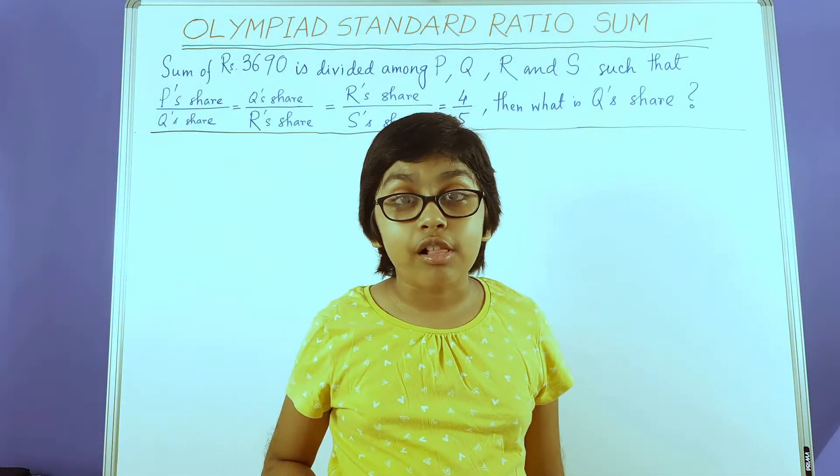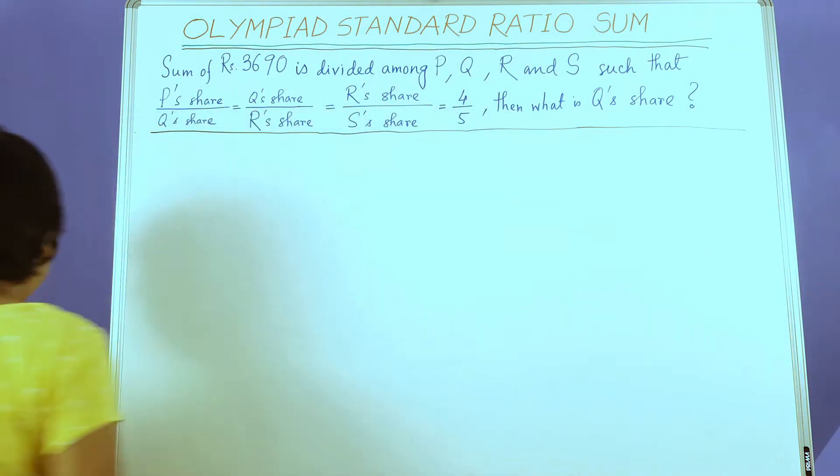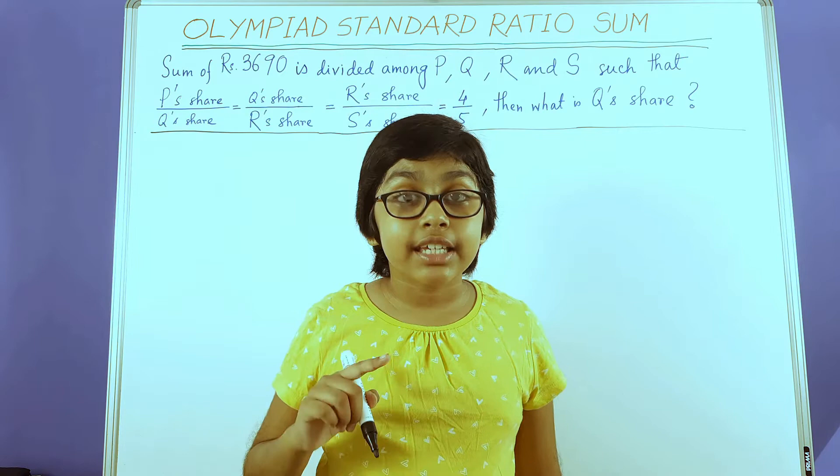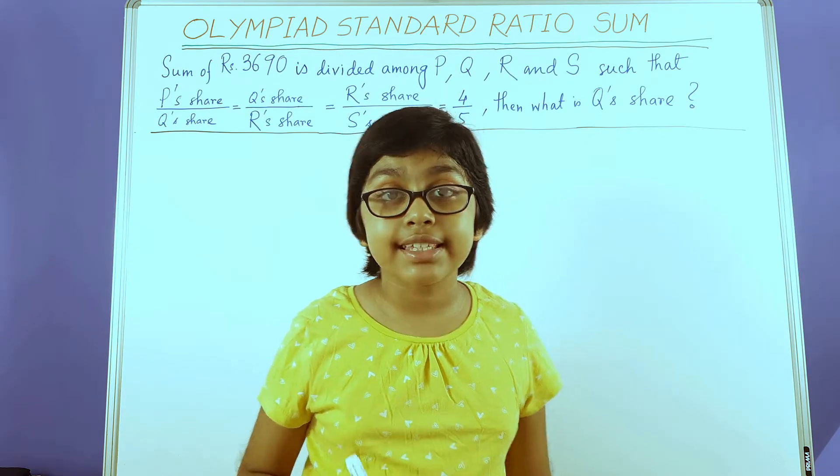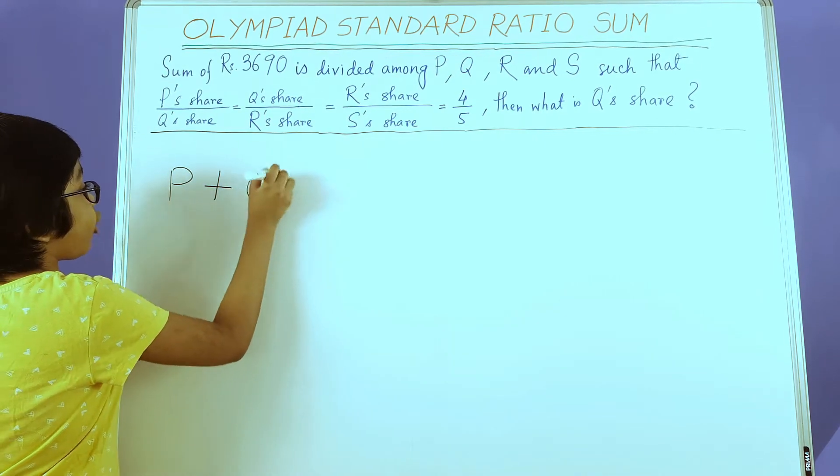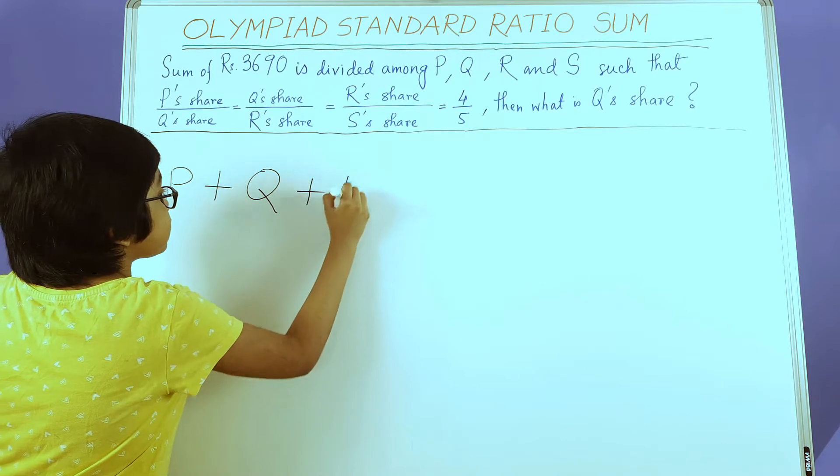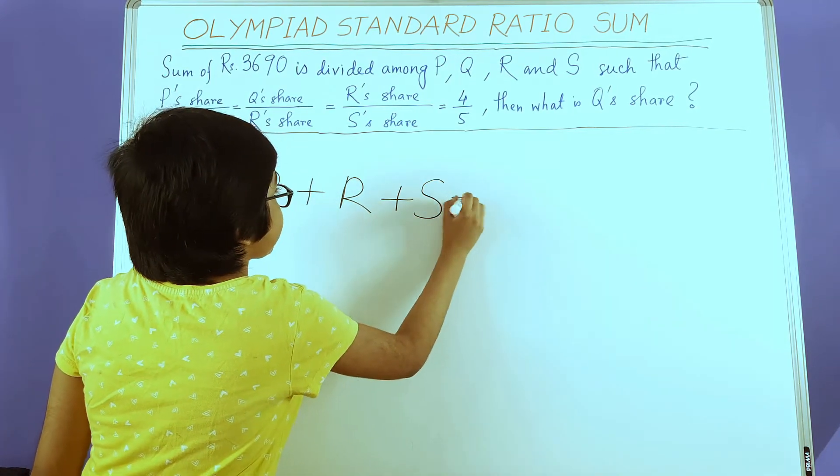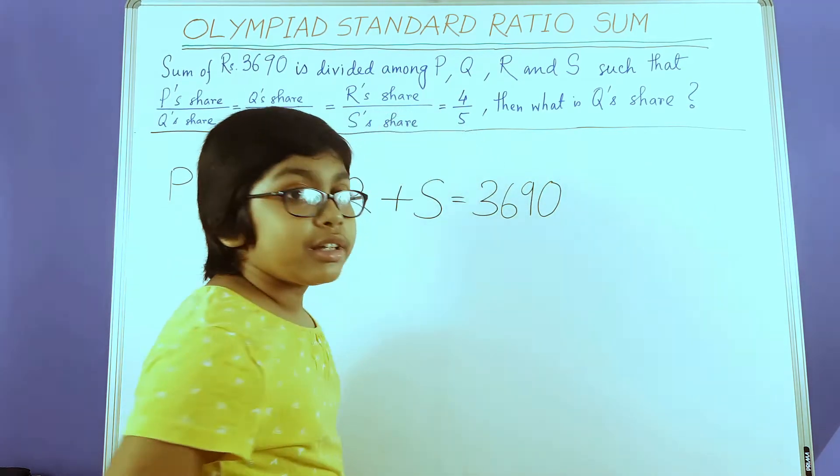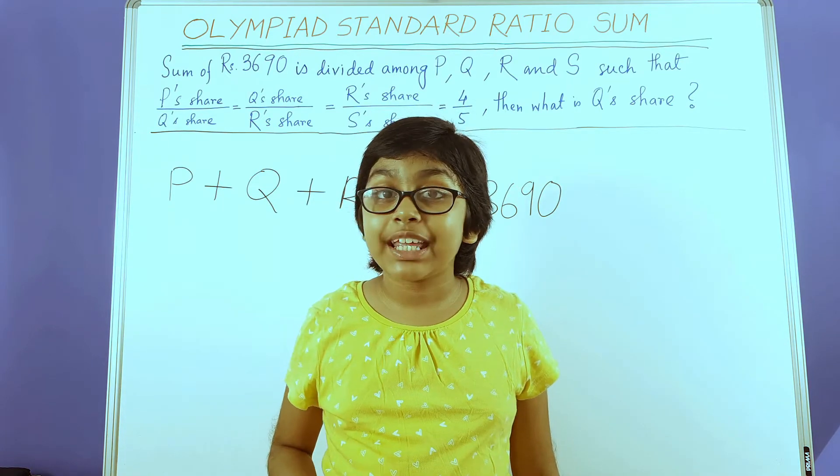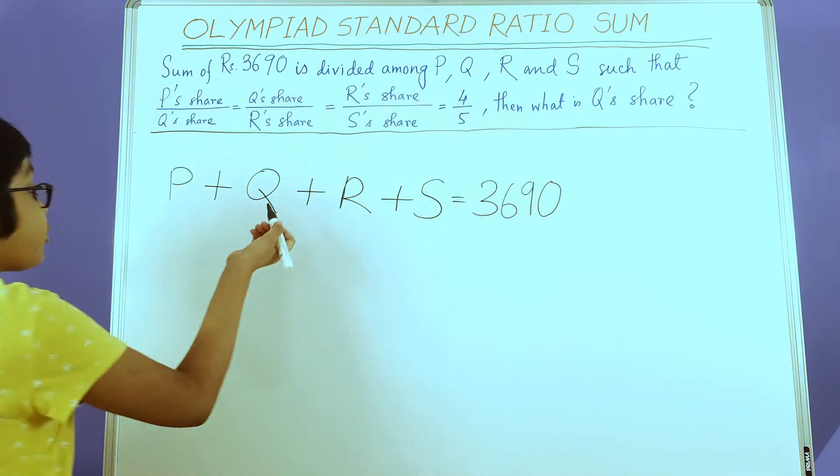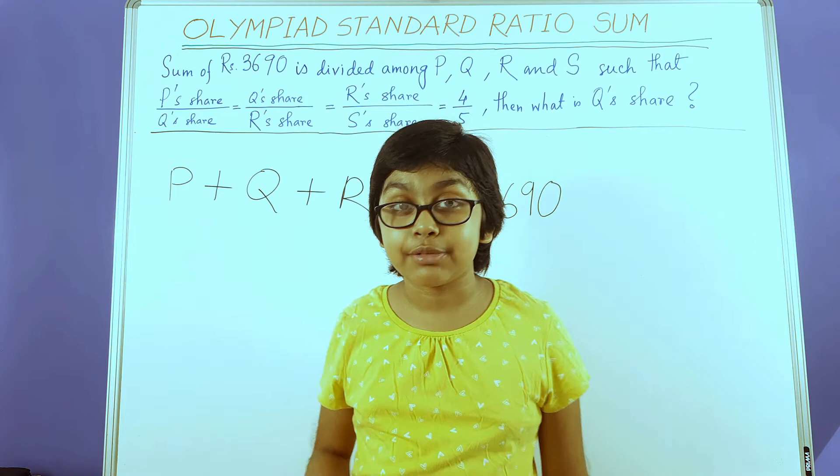The sum is very simple. Let us see how to solve it. Here we have one given fact that the sum of P's, Q's, R's, and S's share is 3690. First we write P + Q + R + S = 3690. Now, here we have to find Q's share, hence we need to express each of the terms in terms of Q, except Q itself.